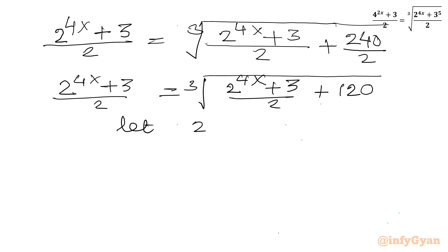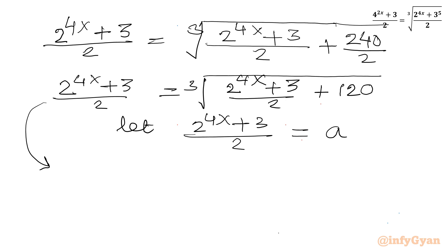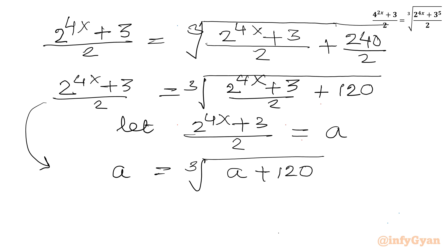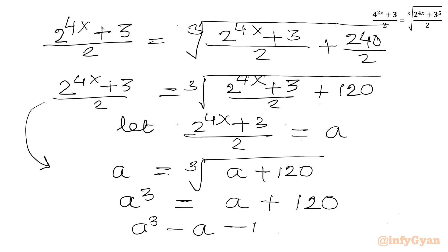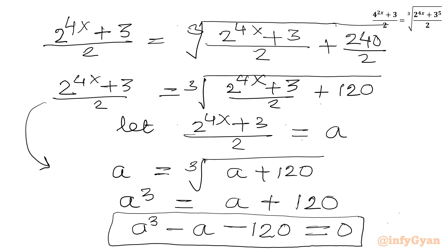Let us consider 2 power 4x plus 3 over 2 equal to a. So our equation becomes: a equal to cube root of a plus 120. Now I will consider cubing both sides. So a cubed equals a plus 120, or I can write a cubed minus a minus 120 equal to 0. This is a cubic equation and I will solve it using the method of factorization.